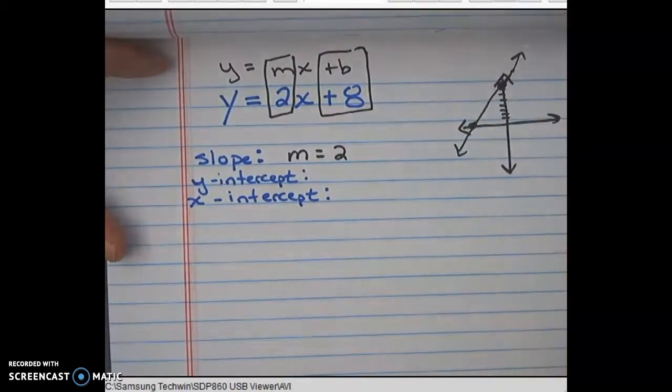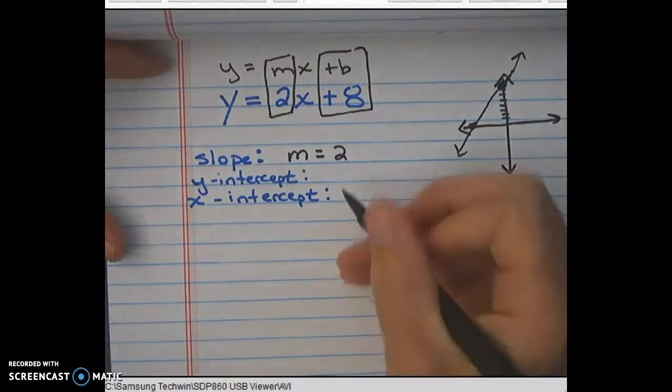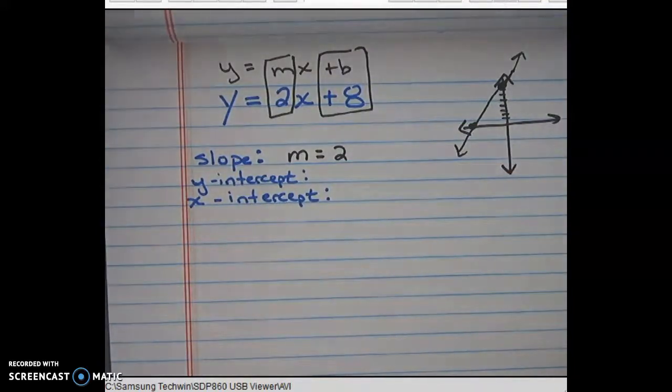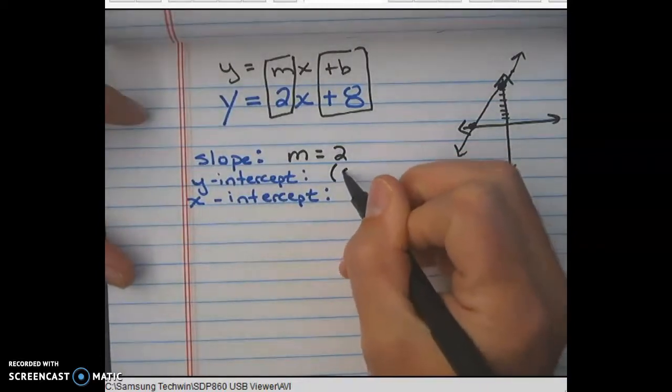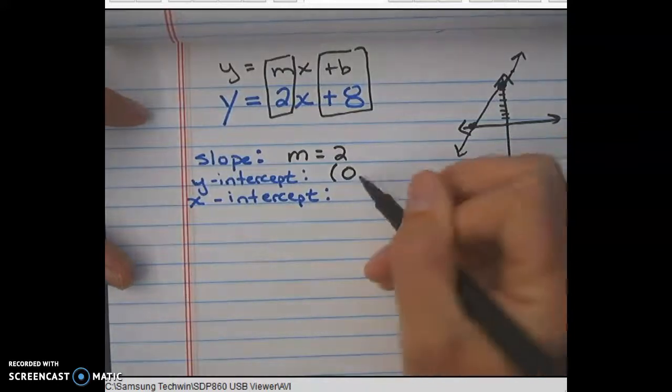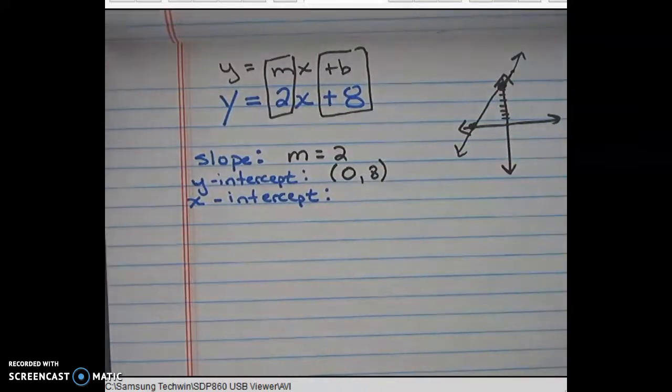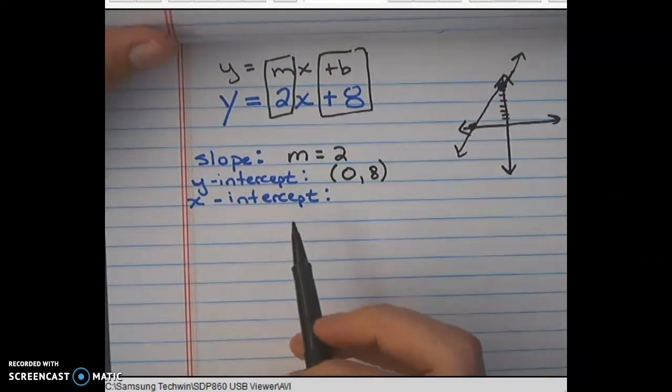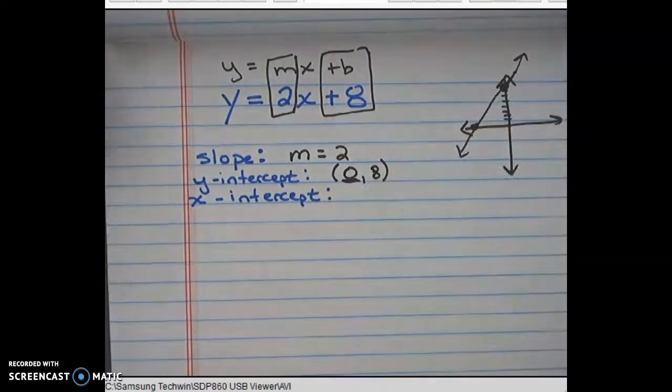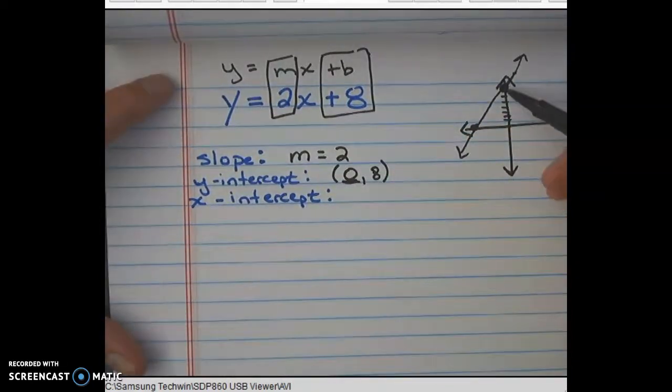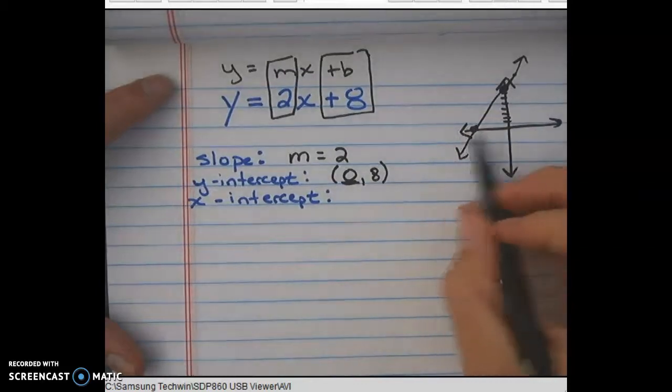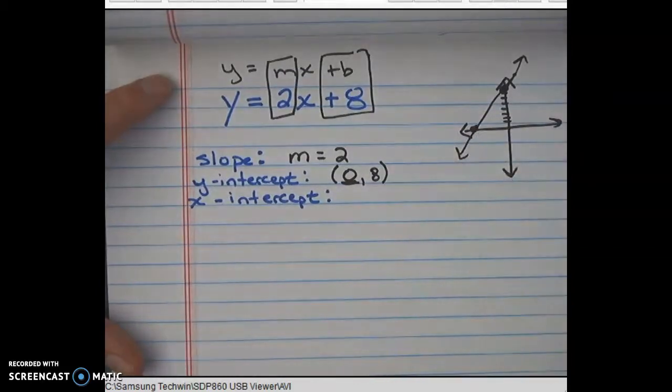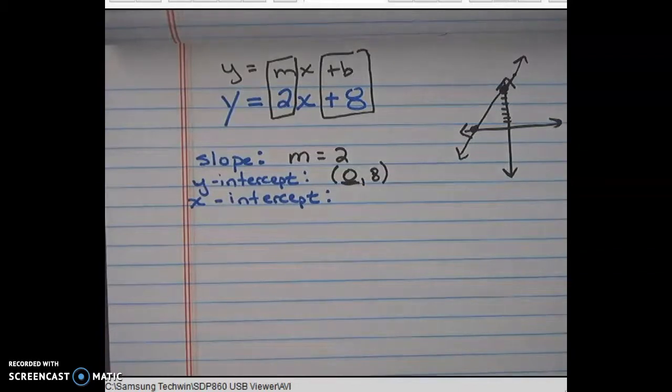And it also tells us our b, which stands for the y-intercept. Now when we talk about y-intercepts, we want to make sure we don't just write 8 for the y-intercept. We like to write y-intercepts as points. It's the point that's 0 over and 8 up. And so what we're going to talk about today is this idea that the intercepts happen at either where x is 0, so up on the y-axis, or where y is 0, somewhere on the x-axis.